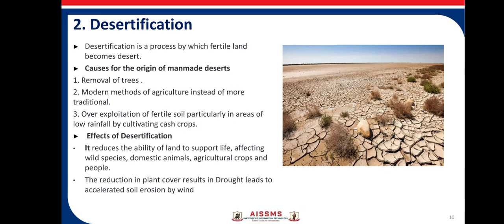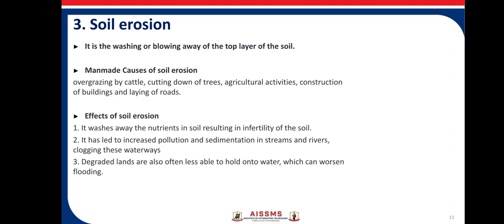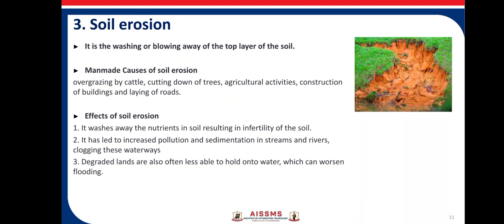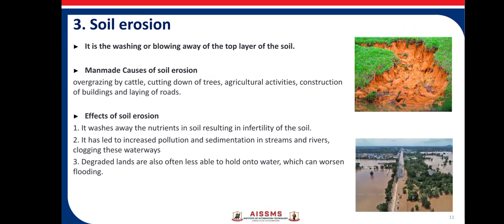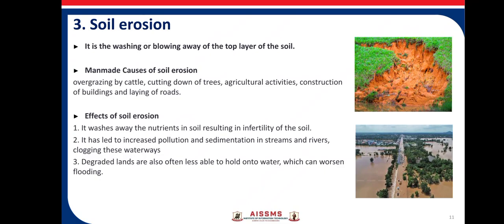Reduction in plant cover results in drought and leads to accelerated soil erosion. Soil erosion is the washing or blowing away of the top layer of soil. Man-made causes include overgrazing by cattle, cutting down trees, agricultural activities, and construction of buildings and roads. The effects of soil erosion include washing away of soil nutrients resulting in loss of fertility, increased sedimentation in streams and rivers clogging waterways, and degraded lands less able to hold water, worsening flooding.